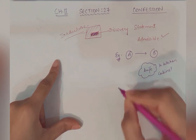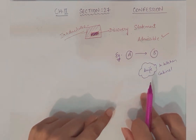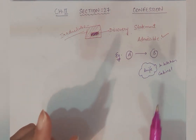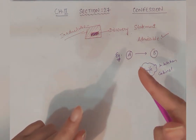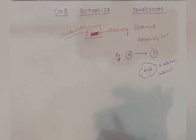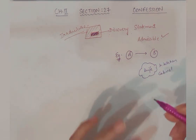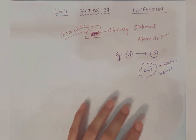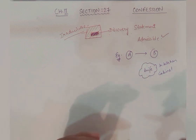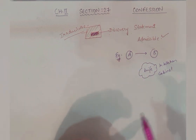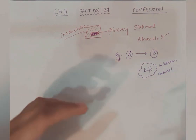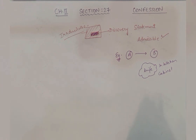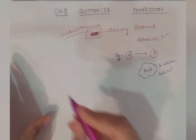This part only — this is relevant — if the knife is discovered on the basis of his information. Police suni uski saari confession, aur agar unhone discover karne ke baad usi ke according usi place par woh weapon dekh liya, woh weapon mil gaya — woh part uska kya ho jayega? Relevant and acceptable, admissible.